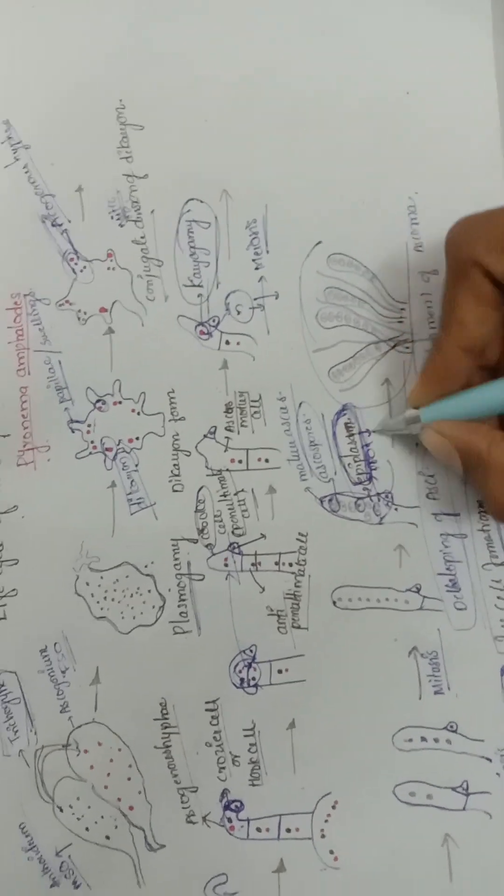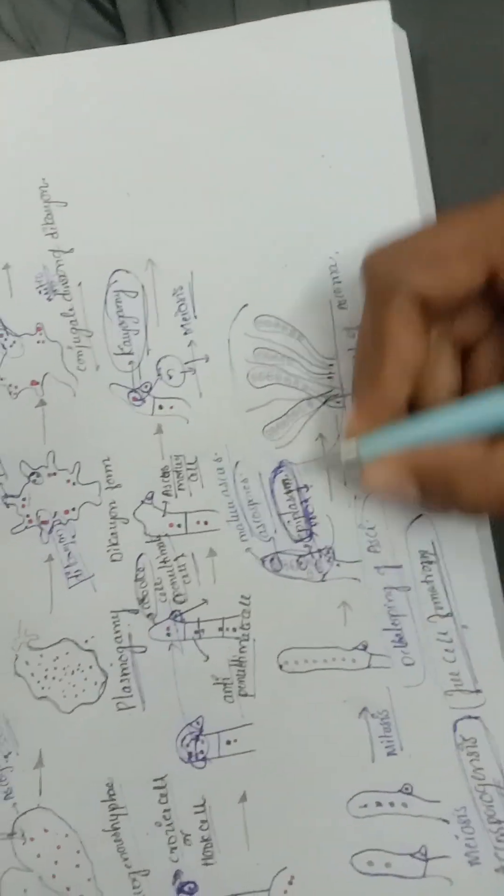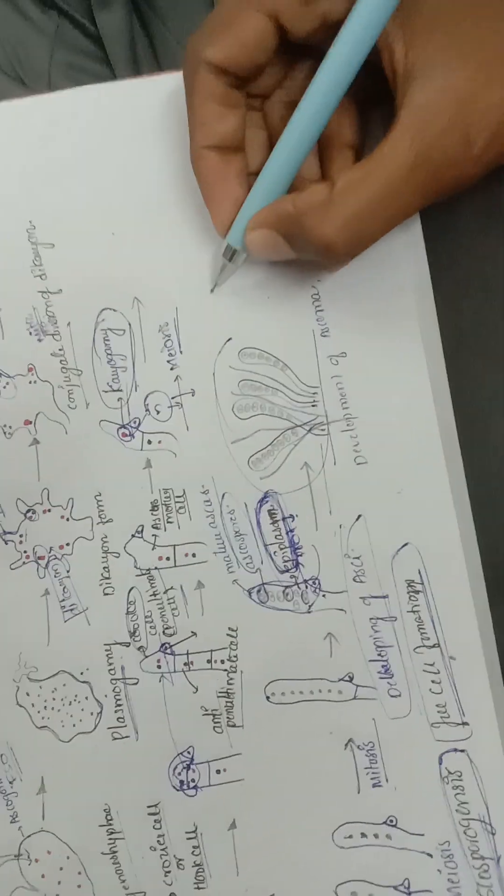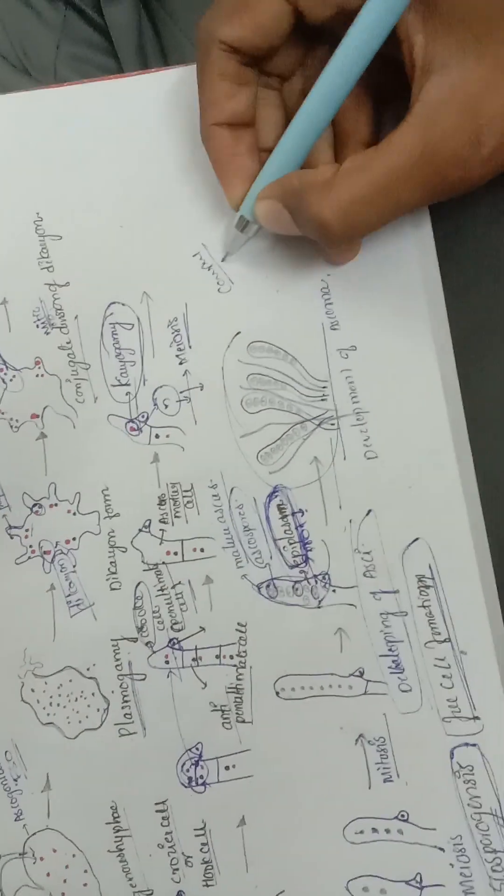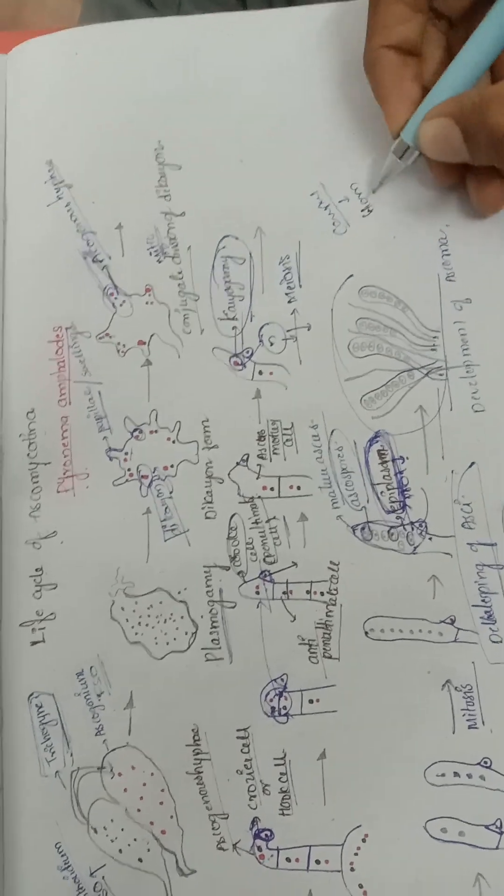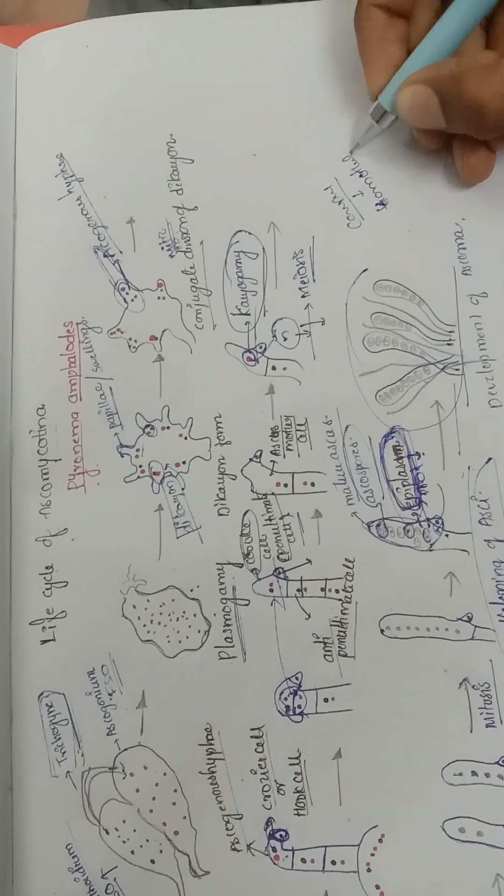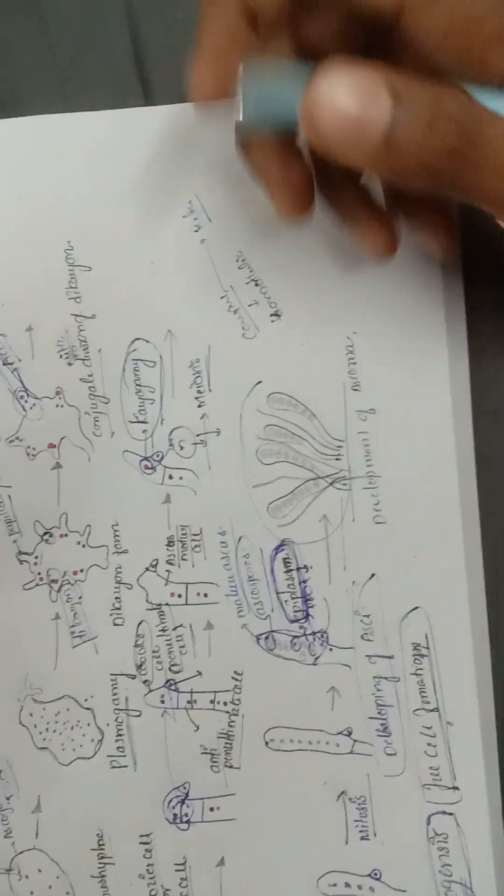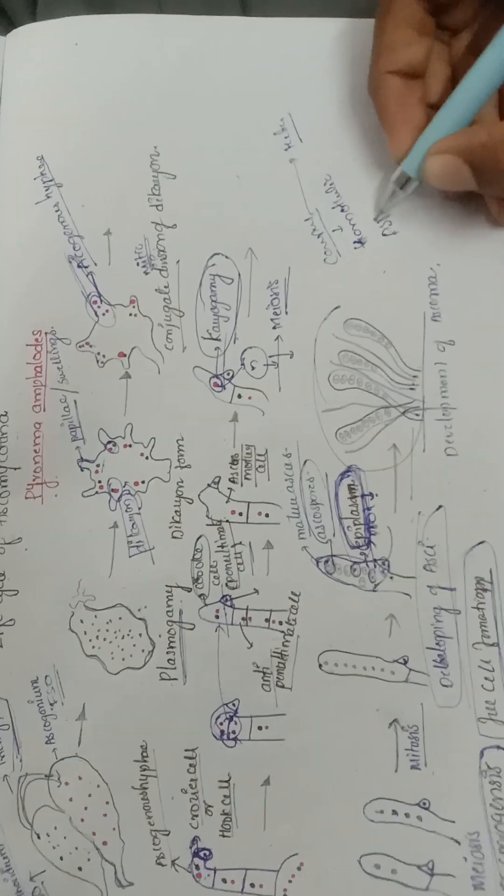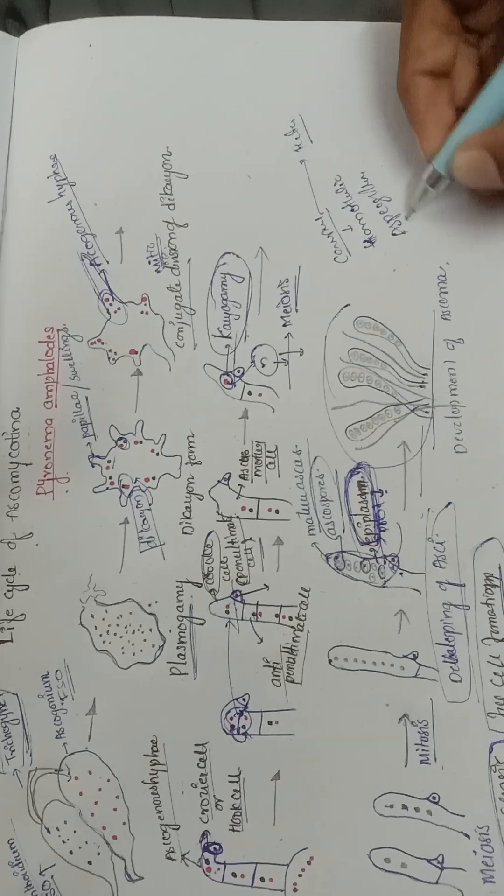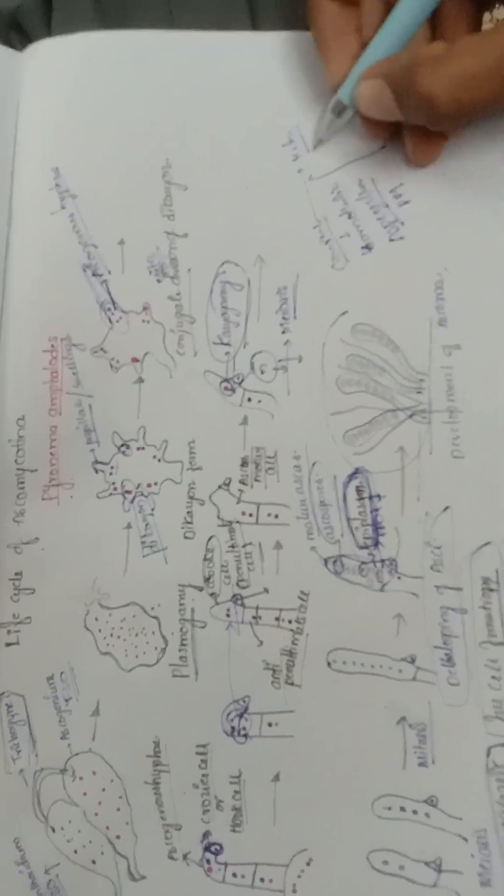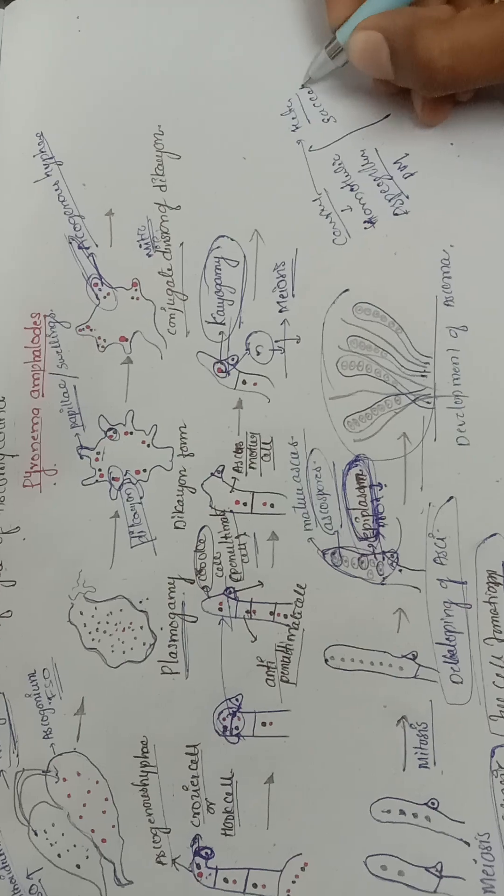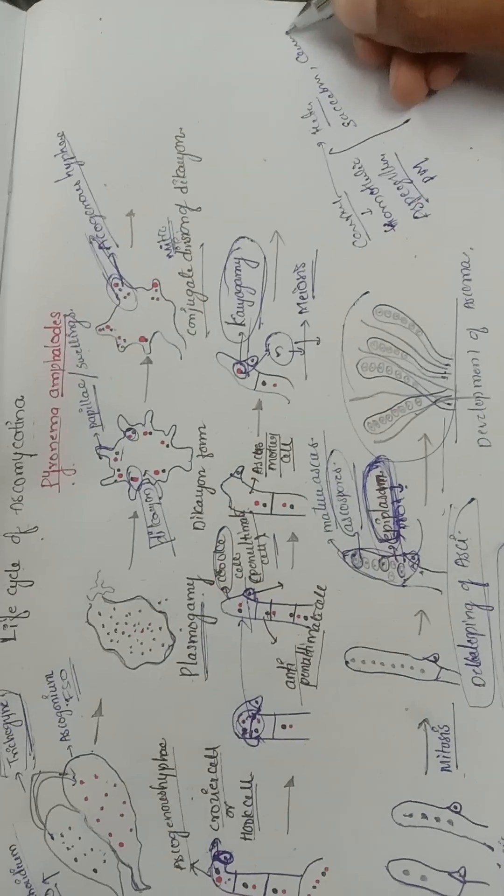The epiplasm is nutritive. Based on compatibility, there are homothallic Ascomycota fungi and heterothallic fungi. Under homothallic, examples are Aspergillus and powdery mildew. Under heterothallic, an example is Saccharomyces cerevisiae.